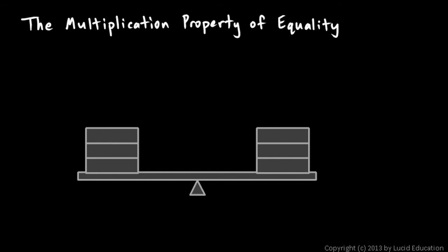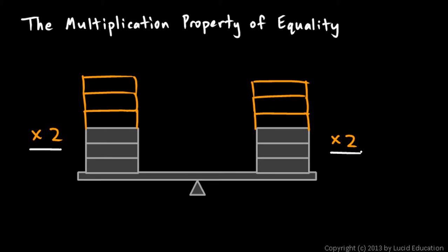Now think about multiplying. Let's take the stack on the left and multiply it by two. So instead of three bricks, there are six. So we just multiplied this side by two. Well, in order to keep it balanced, we have to also multiply this side by two. And the key idea here is that as long as we do the same thing on each side, then it will stay balanced.